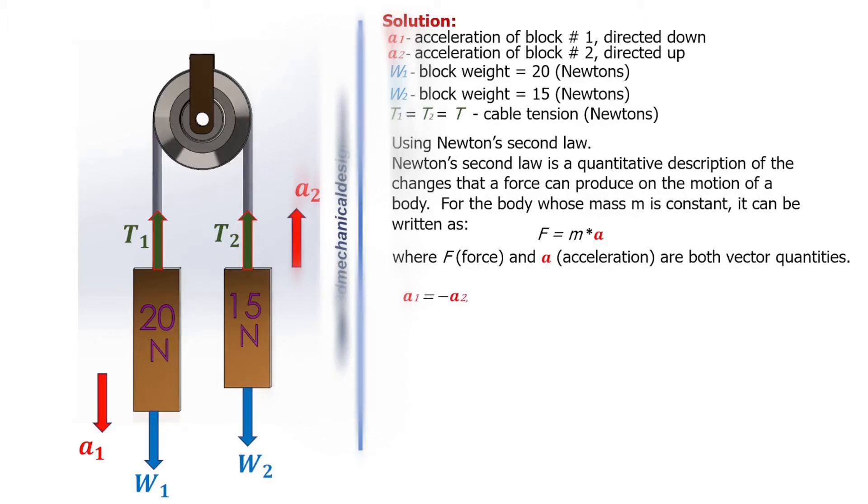a1 equals minus a2, but F equals m times a, so F1 divided by m1 equals minus F2 divided by m2.